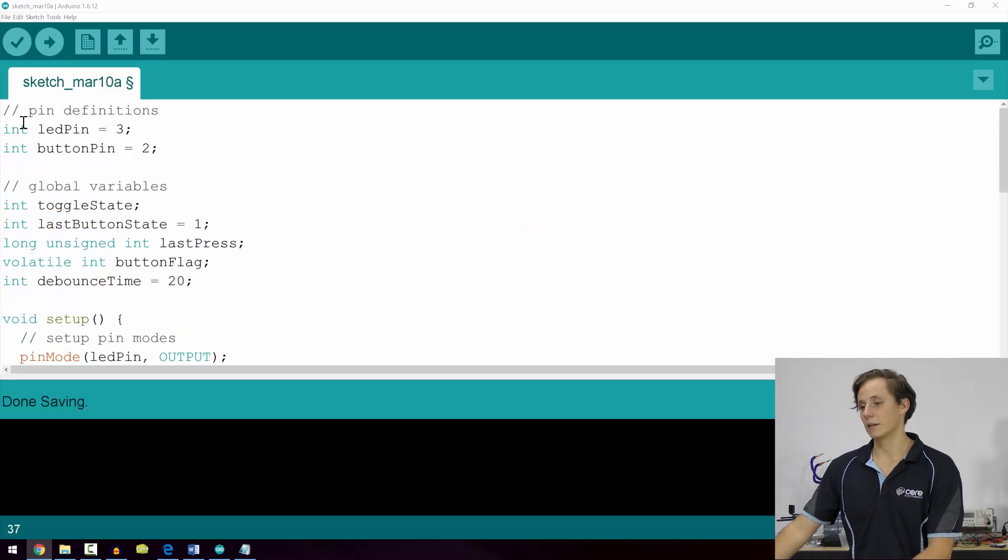So it's almost exactly the same. We've got LED pin, button pin, and some global variables. The only one that's different here that you'll notice is this volatile int button flag.